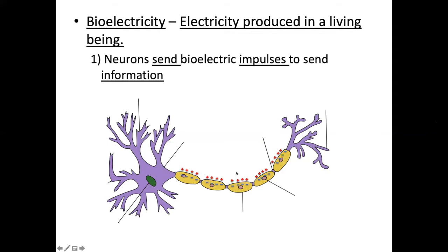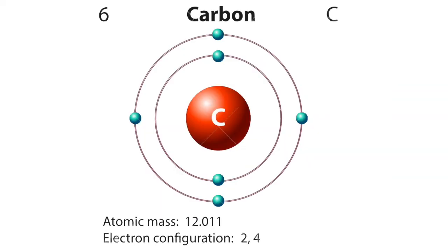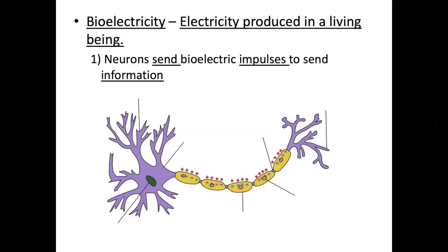So inside this axon and outside, we have these things called ions. Now you should remember ions from physical science. They're atoms, just like any other atom. They are just atoms, except there's a really weird thing about these atoms. They have a weird number of electrons. And remember, an atom is supposed to have the same number of protons and neutrons and electrons, right? So carbon has six protons, six neutrons, six electrons. But if those electrons are numbered differently, then it's an ion.